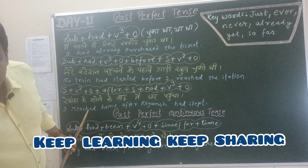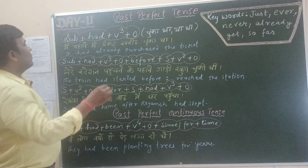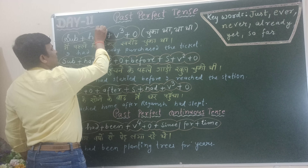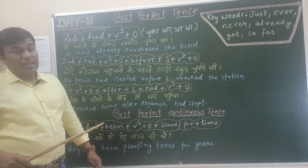You will remember, we have already done present perfect tense. In present perfect tense we use has/have plus V3 plus object. In Hindi, it means चुका है, चुकी है, चुके है — like वह खेल चुका है, मैं पढ़ा चुका हूँ, आप लोग समझ चुके हैं. That is present perfect tense.